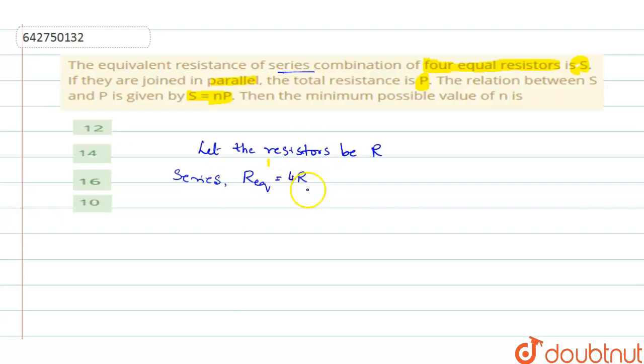And they have given you that when this becomes 4R, the value is S they are giving. Now if they are joined in parallel, if 4R is equal to S,